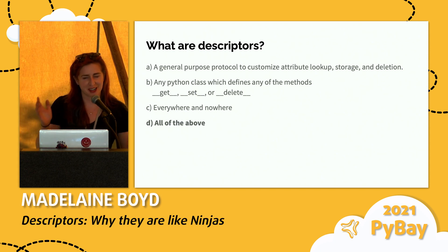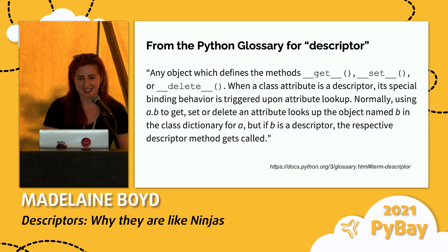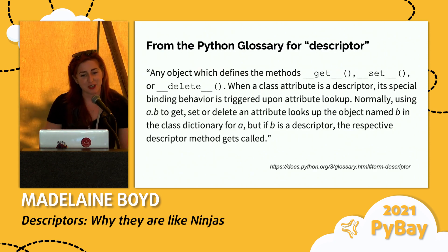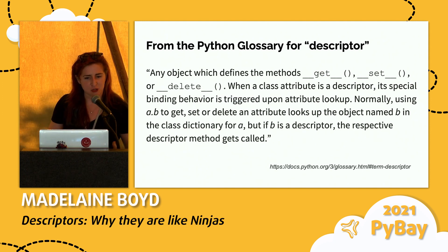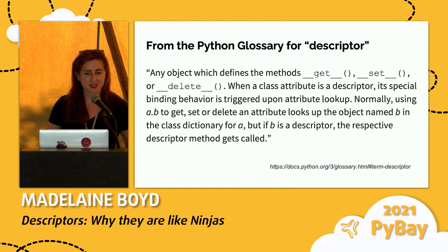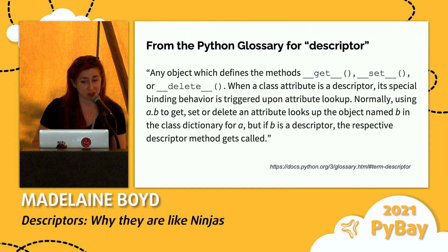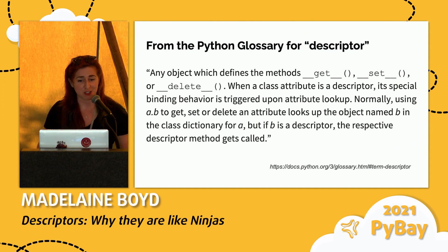Good job — all of the above. No one saw that coming. So, from the Python glossary official definition of what a descriptor is: it is any object which defines the methods get, set, or delete. When a class attribute is a descriptor, its special binding behavior is triggered upon attribute lookup.